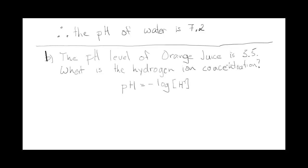In order to get H plus you just have to substitute 3.5 in for your pH value and then solve this logarithmic equation. The way we would do that is first deal with this negative, so we'll divide both sides by negative 1.